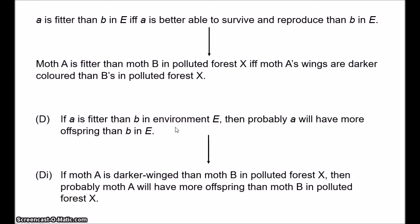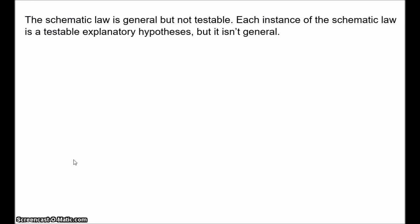So D as a schematic law is not testable. But this instance of D is testable — indeed, this particular instantiation has famously been tested: that was what Kettlewell was testing. The thought is that in stating the schematic law, we give up testability. But when we instantiate the schematic law with a particular example, we have a testable explanatory hypothesis — but it isn't general. In both cases, we're giving up one of the criteria: in the first case testability, and in the second case generality.